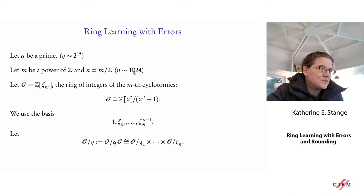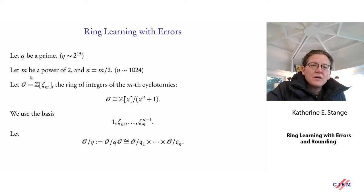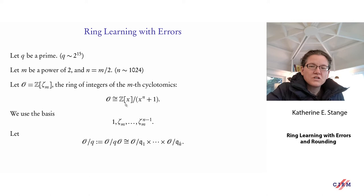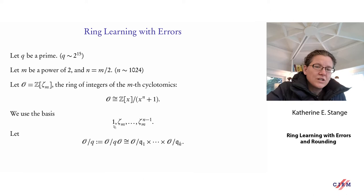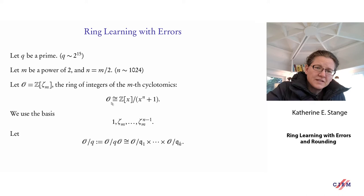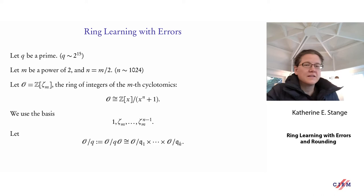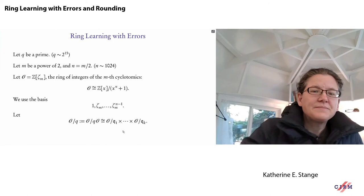Let q be some prime — security is roughly q^n in size. Take the dimension to be a power of two. The vector space is the cyclotomic ring of integers: I take a two-power primitive root of unity ζ_m and build the ring of integers, which is Z[x]/(x^(n/2)+1) — the cyclotomic polynomial for a two-power root. I express elements as vectors of coefficients in powers of the primitive root, then reduce mod q to get a finite ring.